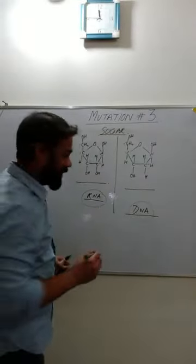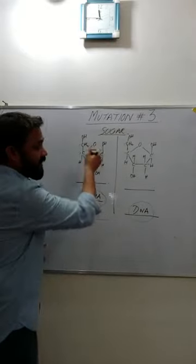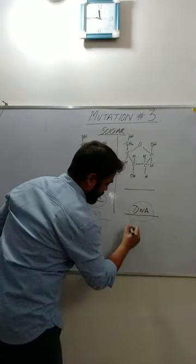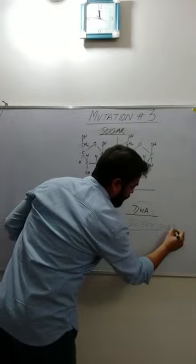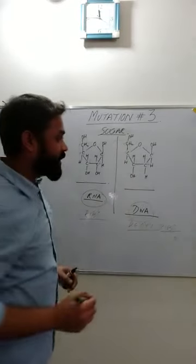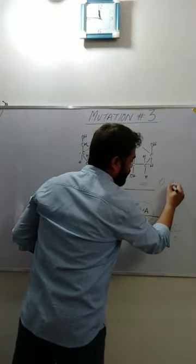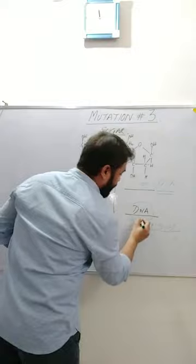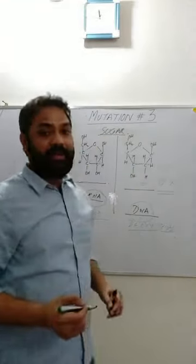RNA is called ribonucleic acid because it has a ribose sugar. DNA is called deoxyribonucleic acid because the oxygen is missing at carbon 2 of the sugar — that's the deoxyribose sugar. So that was the recap about the sugar component of nucleotides.